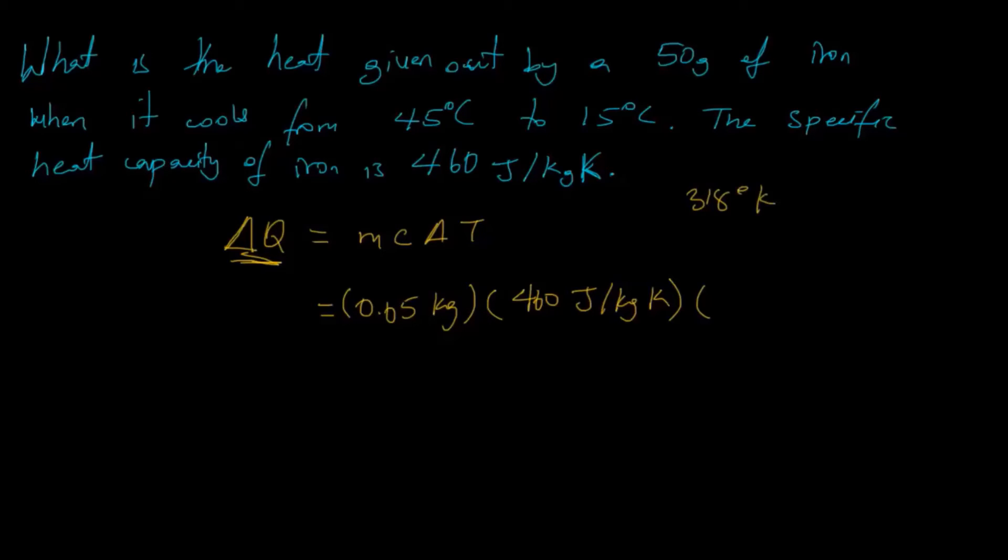And our heat change - first of all we need to convert these to their Kelvin values, which are 318 degrees Kelvin and 288 degrees Kelvin. Now if we take the difference of this, we get that the value is 30 degrees Kelvin. So we can put our 30 degrees Kelvin here, and if we plug this all in our calculator, we get that the heat given out is 690 joules.